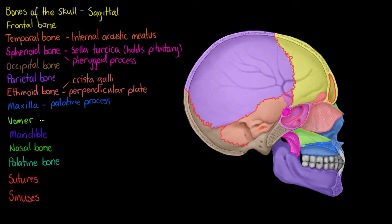Now our vomer that we could only see a very small segment of in the inferior area of our nasal cavity from the anterior view we can see extending back here in this sagittal view all the way to the border of our sphenoid bone. And the vomer is going to form the posterior segment of our nasal septum. Your nasal septum being the cartilage that separates your left and right nostrils.